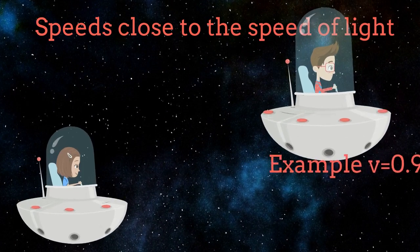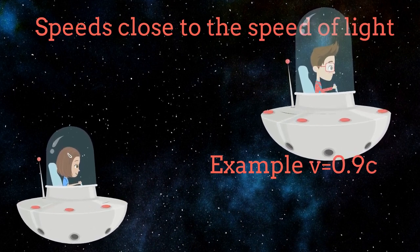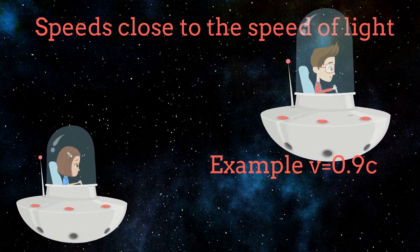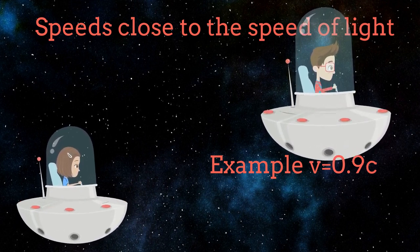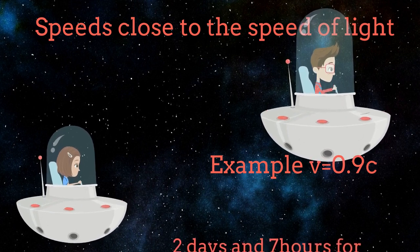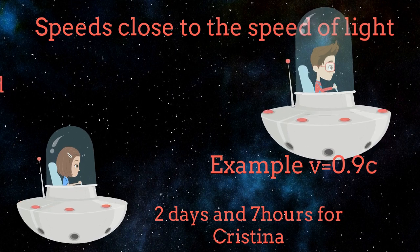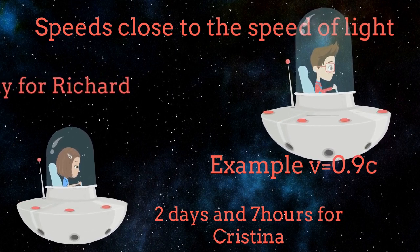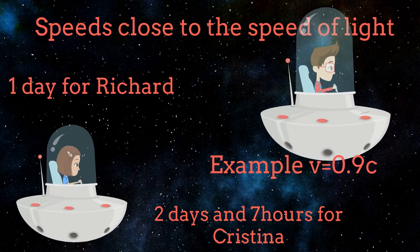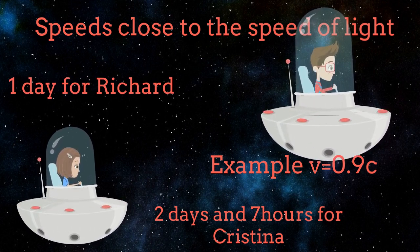In my clock it has been 2 hours and 17 minutes since Richard's departure. In my clock it has been 1 hour since my departure. If Richard is flying on his spaceship at 90% of the speed of light, his clock will lapse at a different rate with respect to the clock of Christina, who is not moving. In this particular case, 1 hour in Richard's clock corresponds to 2 hours and 17 minutes in Christina's clock, or 1 day for Richard corresponds to 2 days and 7 hours for Christina.